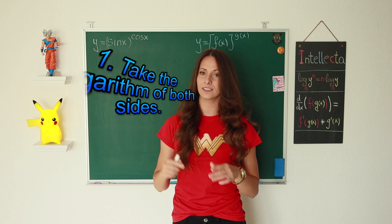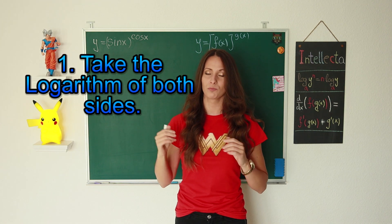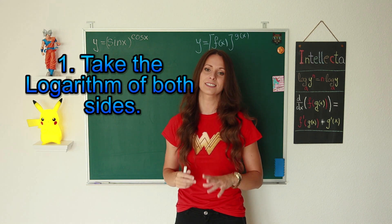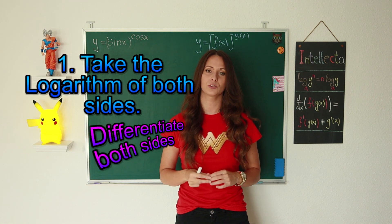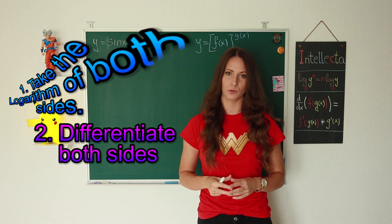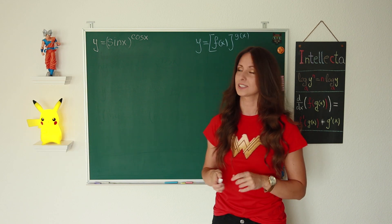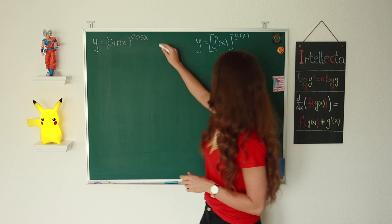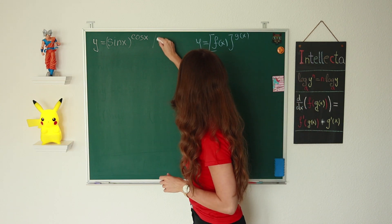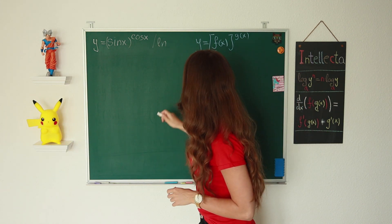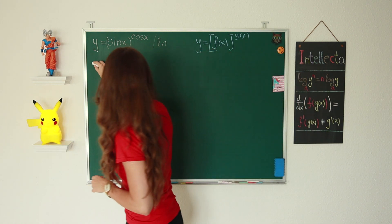The logarithmic differentiation involves two steps. The first one is to take the logarithm of both sides, and the second one is to differentiate both sides.